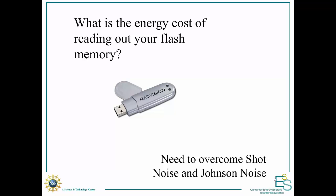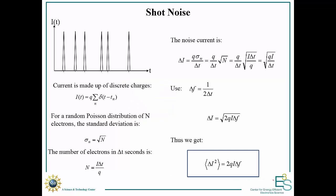The minimum energy is going to be determined by the noise, and we need to overcome two types of noise: the shot noise, which is the noise due to random arrival of electrons, and Johnson noise, which is the thermal noise. To understand the energy cost, we need to first understand the two main noise mechanisms.